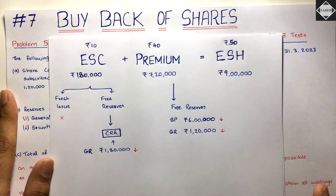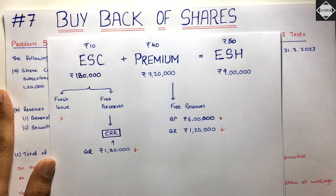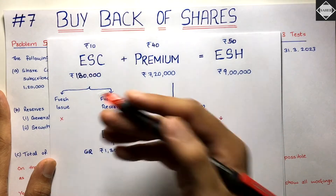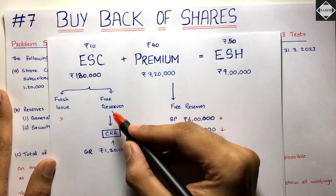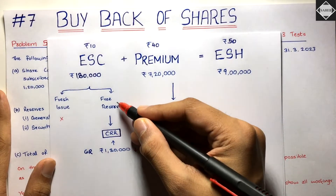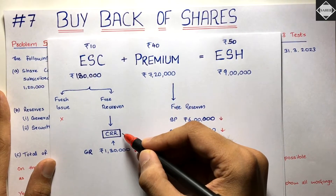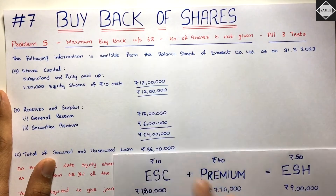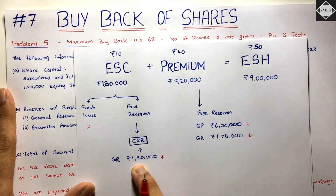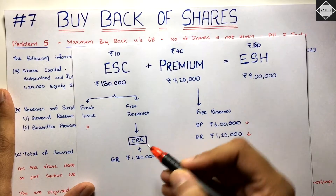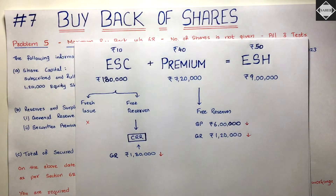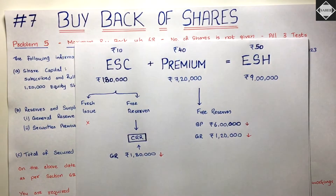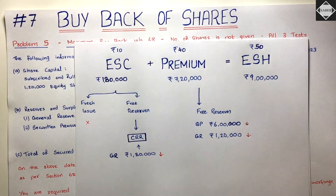The capital needs to be replaced. Since the question is silent on fresh issue, we create a Capital Redemption Reserve (CRR) from free reserves. We use general reserve by ₹1,80,000 to create CRR of ₹1,80,000, replacing the face value of shares bought back. General reserve total was ₹18 lakhs, so we still have enough.